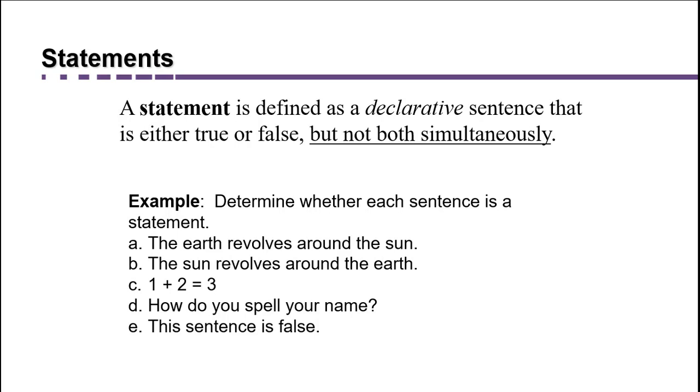In that case, if we assume that the sentence is true, then it contradicts us because it says it's false. If we assume it's false, then by saying it's false, it's saying it's true. So we have a paradox. So this is one of those cases where it can be both simultaneously, and so it's not actually considered a logical statement.